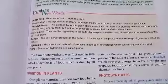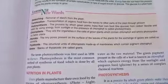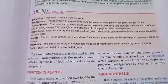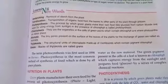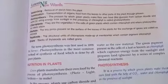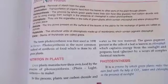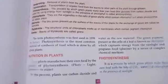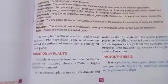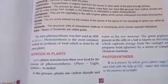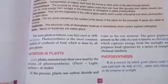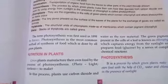Photosynthesis is the common method by which green plants make their food. Why green? Because chlorophyll is essential for making food, and chlorophyll is present in green plants. Green plants require nutrition, and they take their nutrition through the process called photosynthesis.